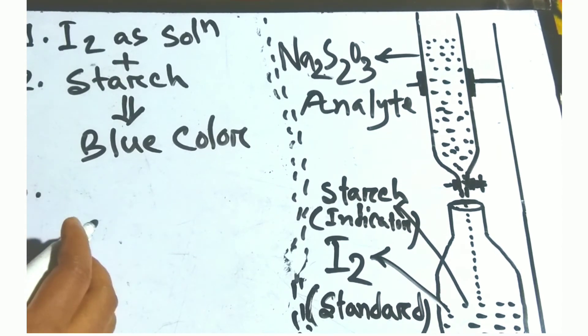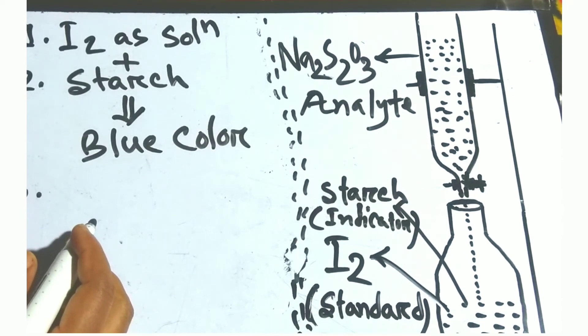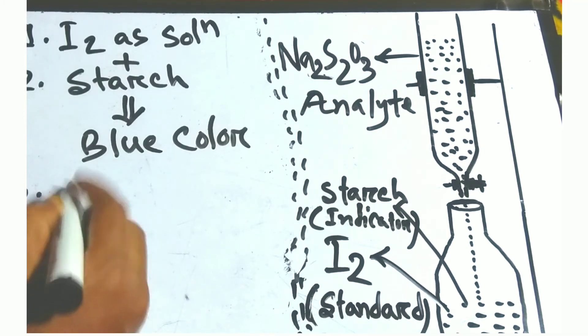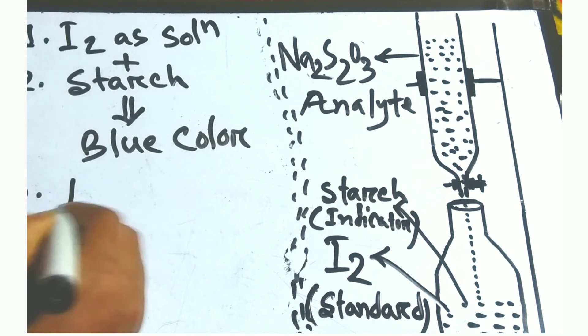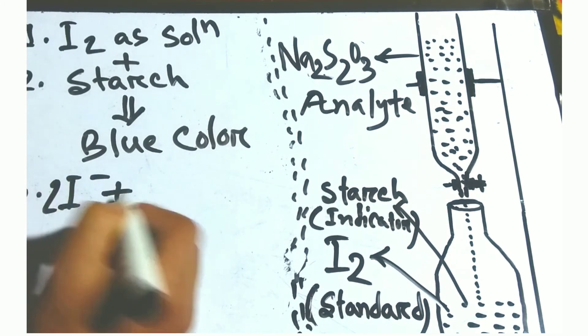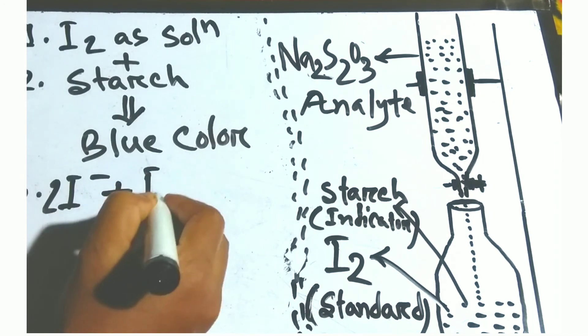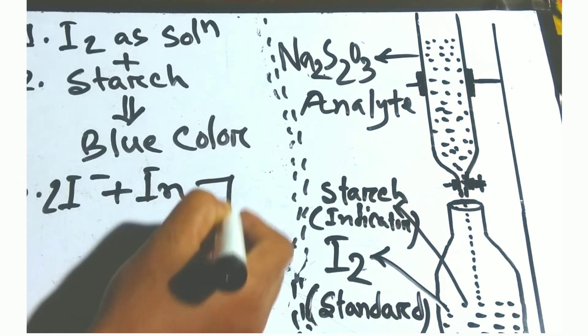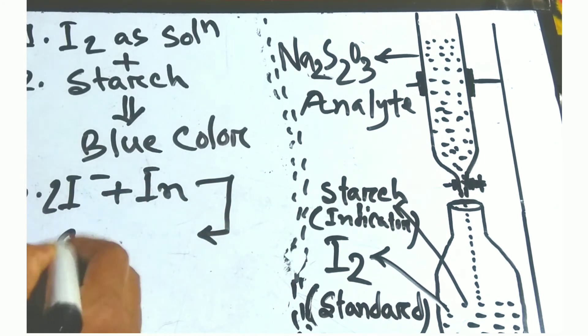Then we add sodium thiosulfate from the burette drop by drop, and when the solution reaches the equivalence point, the solution turns colorless because the remaining iodide ion will react with indicator and it produces a colorless solution.